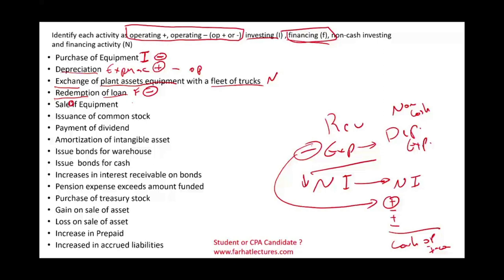Sale of equipment is the opposite of a purchase of equipment — so it's investing. When you sell equipment, that's a positive cash flow. Now, selling your equipment is not always good, especially if you are trying to raise cash, because you don't really want to sell equipment unless it's no longer needed. But it's investing and it's bringing cash — positive.